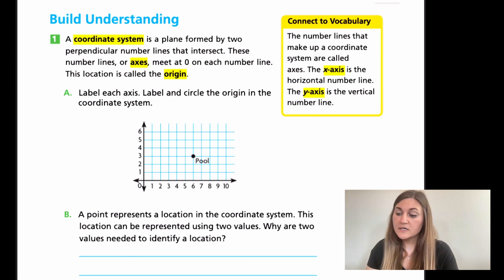Number one, it says a coordinate system is a plane formed by two perpendicular number lines that intersect. That was a bunch of really big new words. A coordinate system is what you see below with the number line going this way and the number line going this way with the blue grid. That whole thing is called a coordinate system. And you're going to put something called coordinates, and those are just the dots that we marked. When you have an entire system together, it's called a coordinate system. A plane is just a flat ground that you can mark data on.